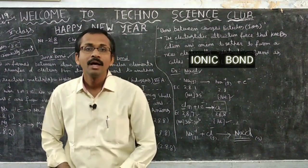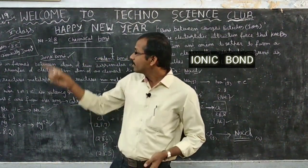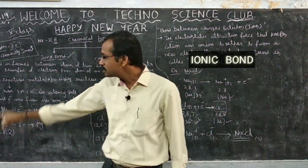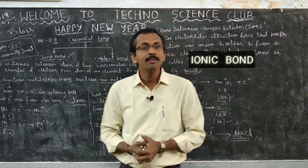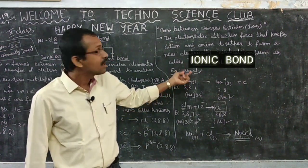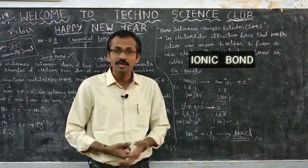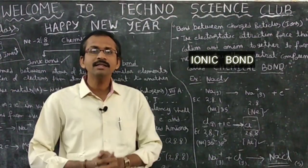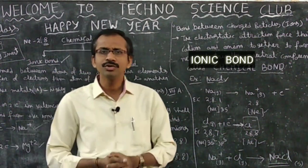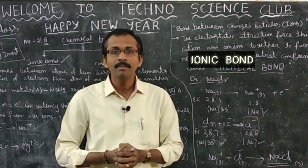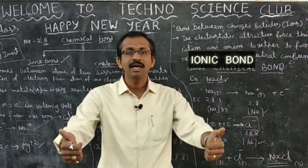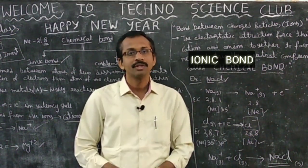In today's class we learned about the ionic bond — about chemical bonding, its two types, and specifically the ionic bond: what it is, how it is formed between sodium and chlorine atoms with an example, and the definition of the ionic bond. If you like this video, please like, share with your friends on social media, subscribe to our channel, and press the bell symbol. Thank you for watching. Jai Hind.